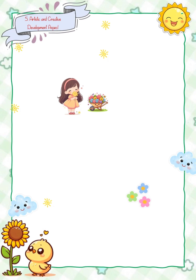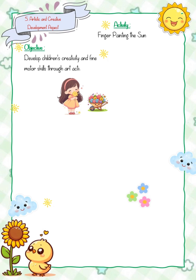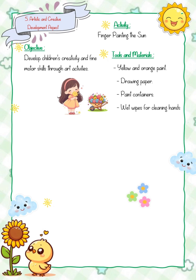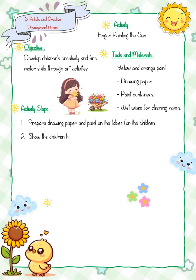Activity five, artistic and creative development aspect: finger painting the sun. Objective: develop children's creativity and fine motor skills through art activities. Tools and materials: yellow and orange paint, drawing paper, paint containers, and wet wipes for cleaning hands. Activity steps: one, prepare drawing paper and paint on the tables for the children. Two, show the children how to use their fingers to create a circle shape for the sun.